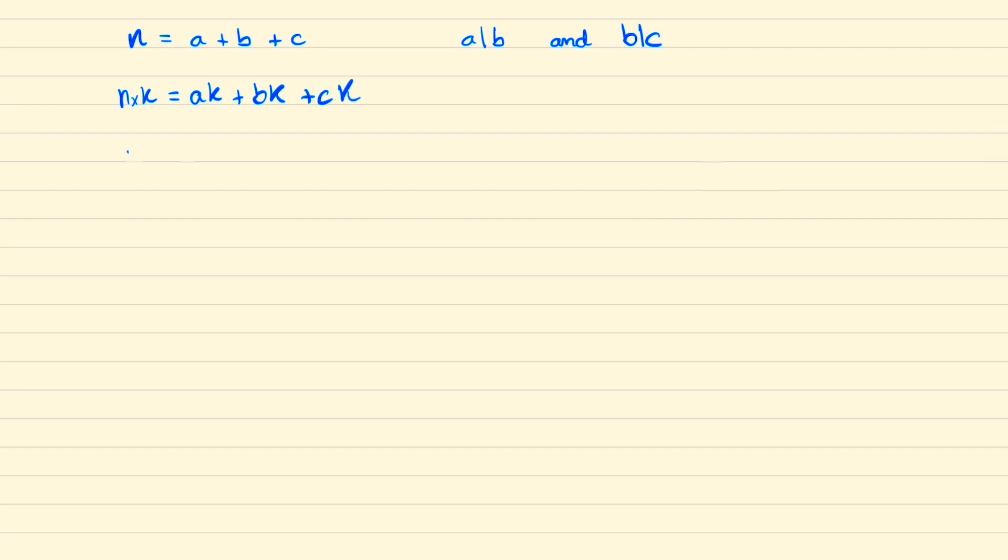We'll also notice that the smallest faithful number will be when a is 1, b is 2, and c is 4, and so n equals 7 is the smallest faithful number which means the numbers 1 to 6 must be unfaithful.